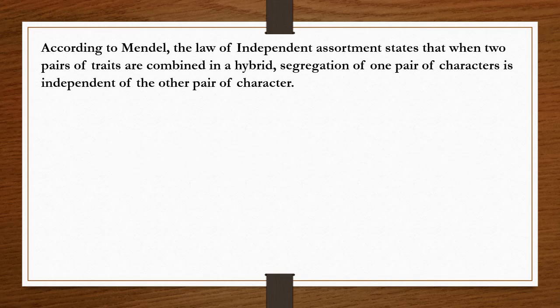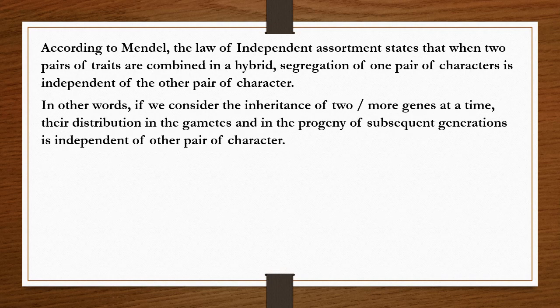According to Mendel, the law of independent assortment states that when two pairs of traits are combined in a hybrid, the segregation of one pair of characters is independent of the other pair of characters. In other words, if we consider the inheritance of two or more genes at a time, their distribution in the gametes and in the progeny of subsequent generations is independent of other pairs of characters.